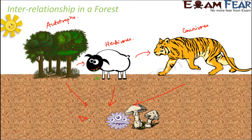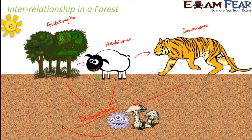When all of these die, they are decomposed by the decomposers. The decomposers are mostly bacteria and fungi, and the bacteria are mostly present in the soil. So this entire process of decomposition takes place in the soil. As a result of decomposition, these decomposers convert the dead remains of plants and animals into something called humus.